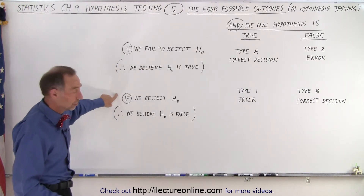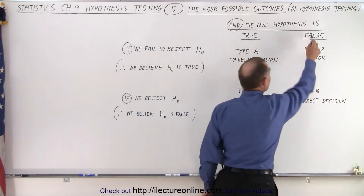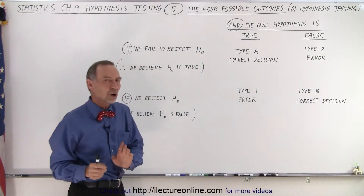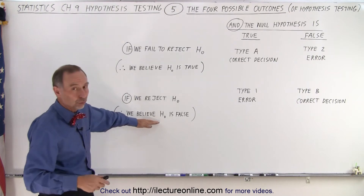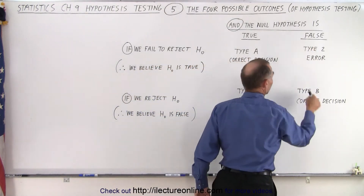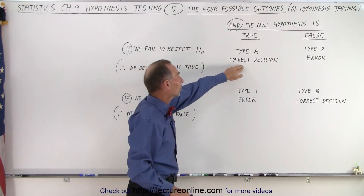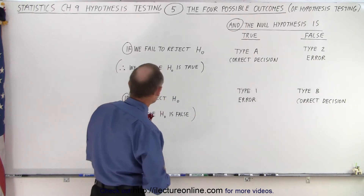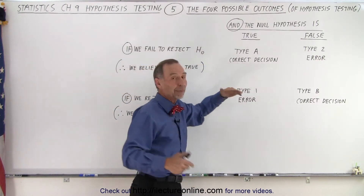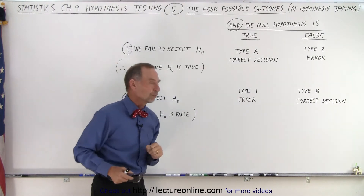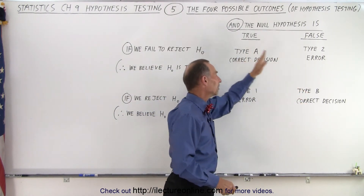But, if we reject the null hypothesis, meaning we believe that the null hypothesis is false, and let's say that it is indeed false, that's also a correct decision — we call that a type B correct decision. In other words, we reject the null hypothesis, we don't think that it's true, we believe that it's false, and it's actually false, then we made another correct decision. So, if we fail to reject the null hypothesis and the null hypothesis is true, then we made the correct decision — we don't reject it, we accept it, and it's true. Or, if we reject the null hypothesis because we believe it's false, and it actually is false, again, we made the correct decision, so we call that type A and type B correct decisions.